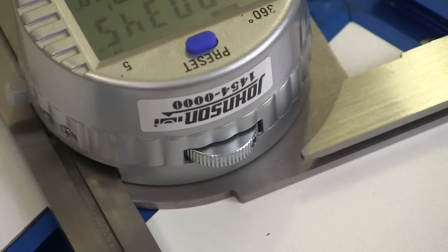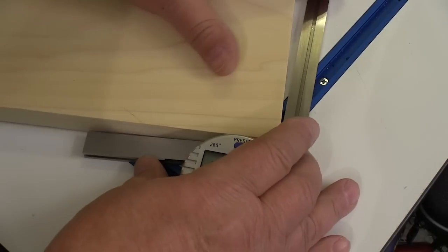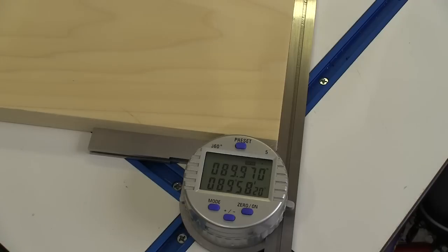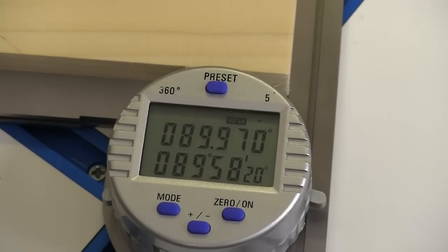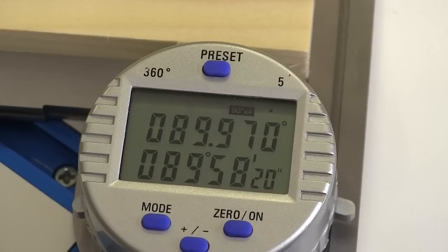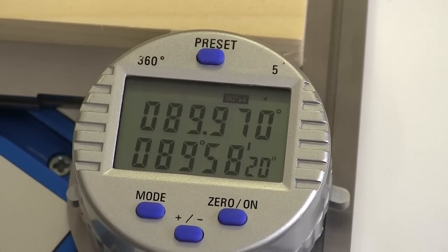There is a downside to having such an accurate tool, because you'll find out what you used to call 90 degrees may not be exactly that. Trying to adjust the miter gauge or other tool to get this to exactly 90 degrees isn't as easy as it sounds.